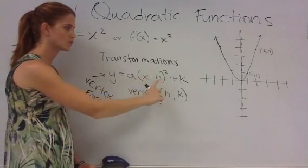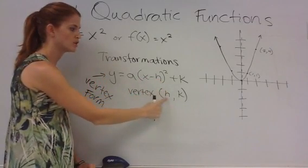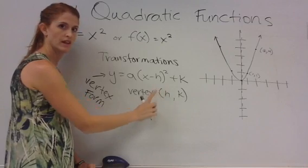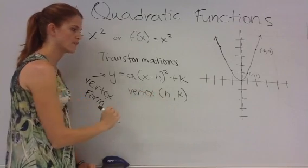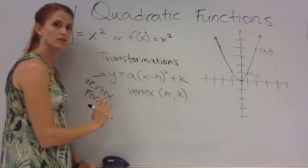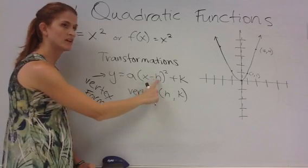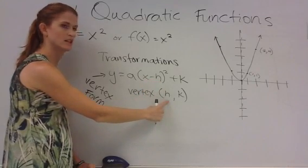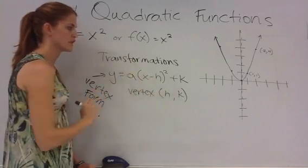Notice in this equation this is a negative h, but right here we just have an h. That's going to play a very important role when we try and find the vertex in our first example. So remember this is a negative h here, but we just want h in this location. So this would be the vertex.